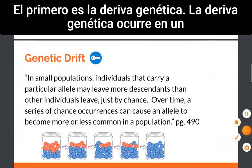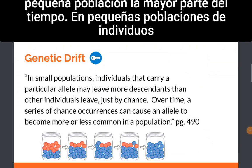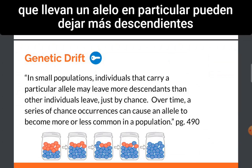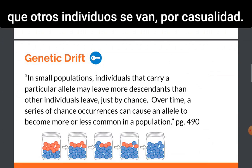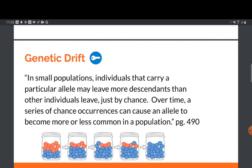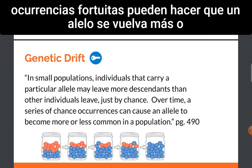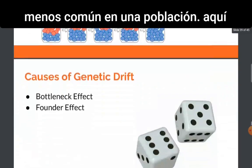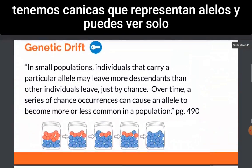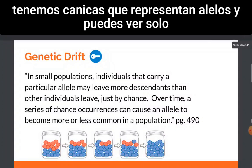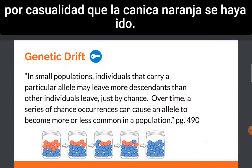The first one is genetic drift. Genetic drift occurs in a small population most of the time. In small populations, individuals that carry a particular allele may leave more descendants than other individuals just by chance. There is no selective process in this. Over time, a series of chance occurrences can cause an allele to become more or less common in a population. Here we have marbles representing alleles, and you can see just by chance that the orange marble is gone.